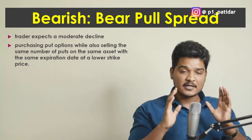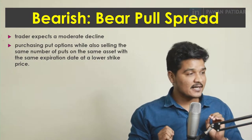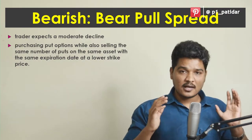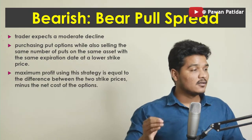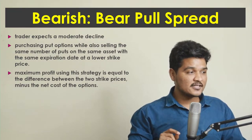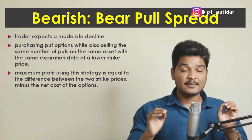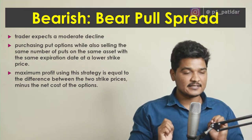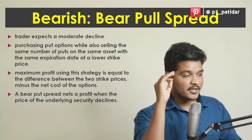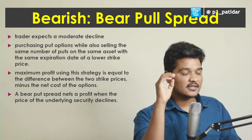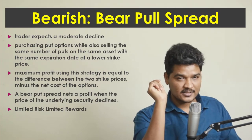We keep the buy and sell quantity the same and use the same expiration date to execute the bear put spread strategy. The maximum profit using this strategy equals the difference between the two strike prices minus the net cost of options. This is a debit strategy, not a credit strategy, so you subtract the net cost of options. The strategy nets a profit when the price of the underlying security declines.